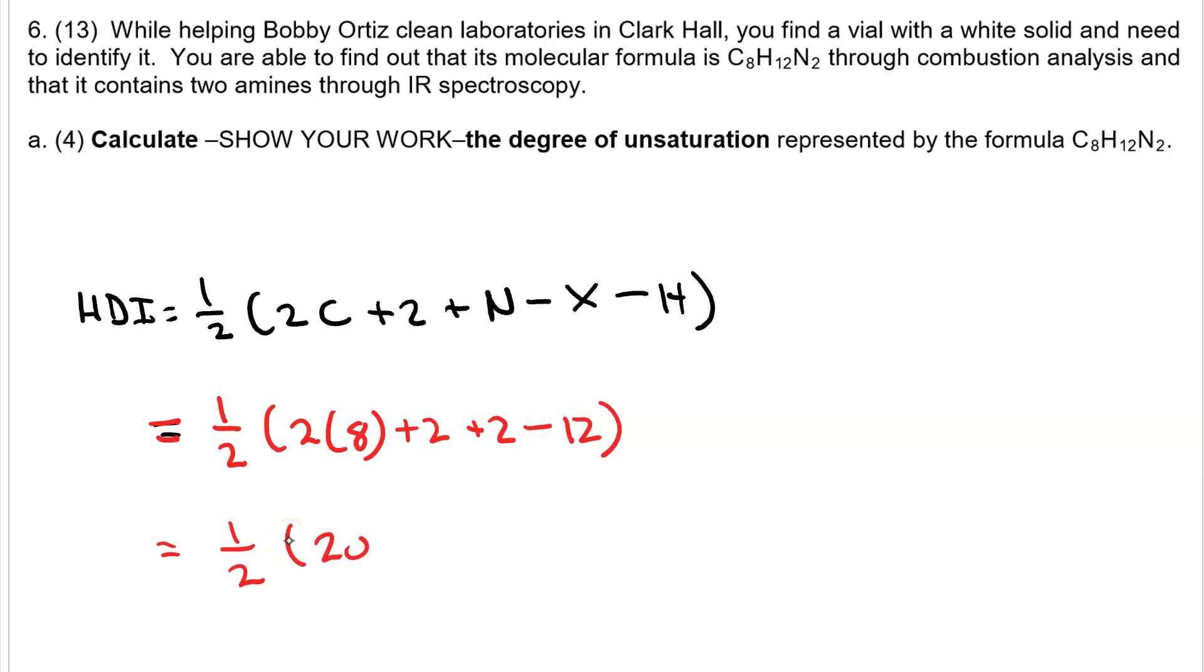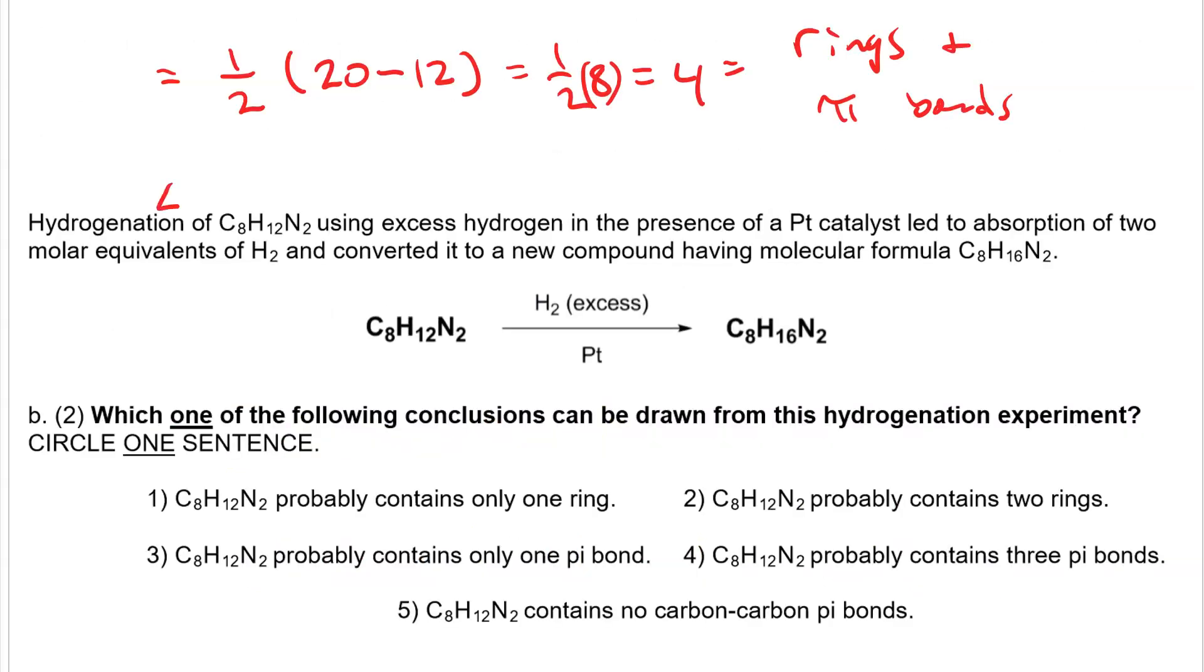Which comes to 1/2 of 20 minus 12 or 1/2 of 8 which equals 4. And 4 is the number of rings plus the number of pi bonds. When we do hydrogenation we'll add 2 hydrogen atoms for each pi bond. So looking at the formula of the catalytic hydrogenation product tells us the number of pi bonds.